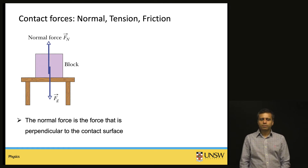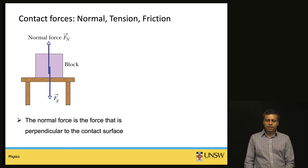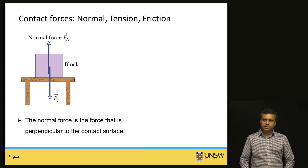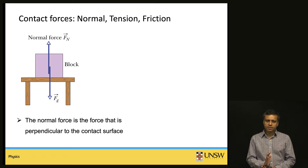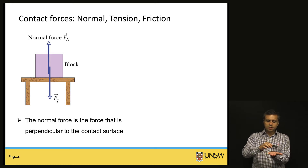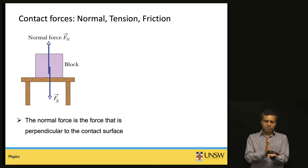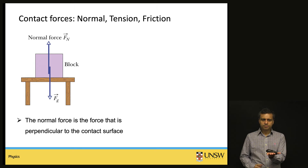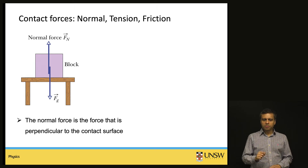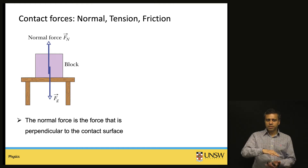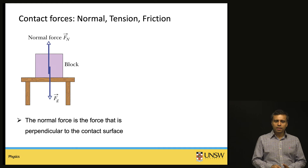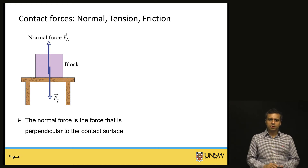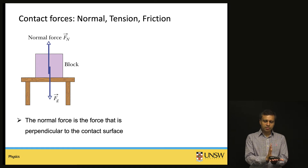Let us look at some examples of contact forces. First, the normal force — a force that is perpendicular to the surface of an object. For example, if a book rests on a table, the book pushes on the table due to its weight, but the table also pushes back on the book upward to keep it balanced. Otherwise it would accelerate. This vertical force that the table exerts on the book is the normal force.